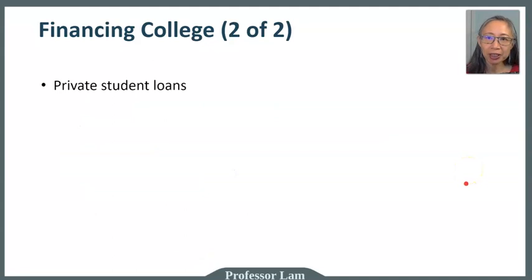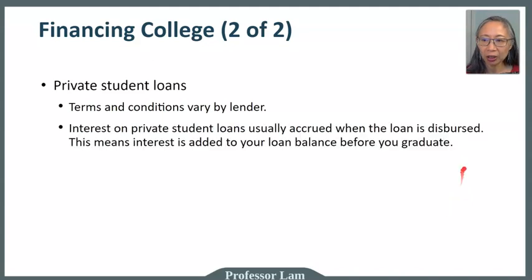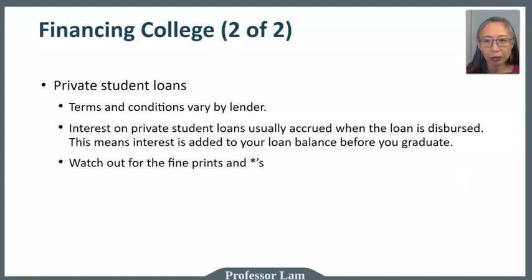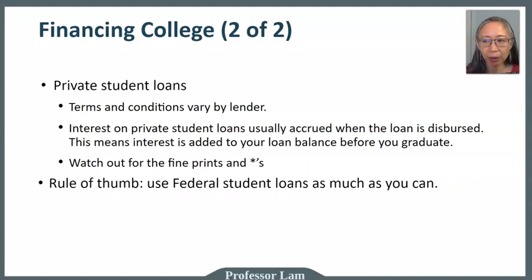There are also private student loans. The terms and conditions are set by the lender. Interest on these loans is typically similar to unsubsidized loans, meaning they accrue when the loan is given, so interest will keep adding to your balance before you graduate. It's important to watch out for all the fine print, because these loans are not regulated or issued by the government. The interest rates are set by the lender and can be a lot higher than those set by Congress. As a rule of thumb, you should try to use federal loans as much as you can.